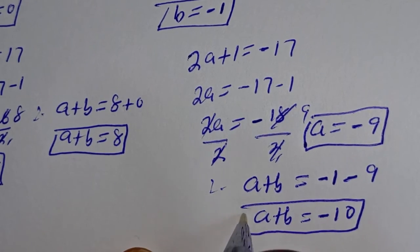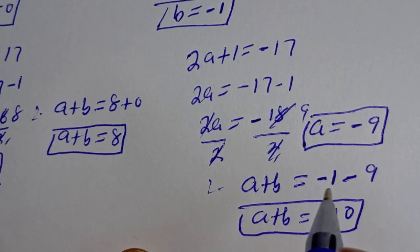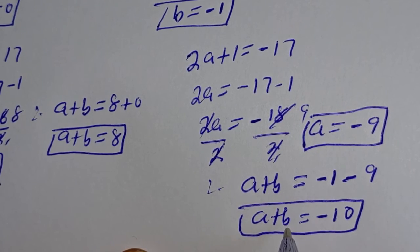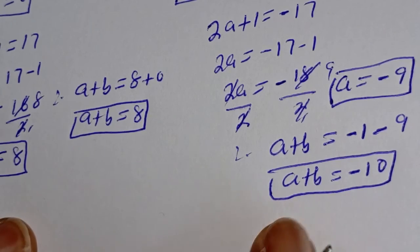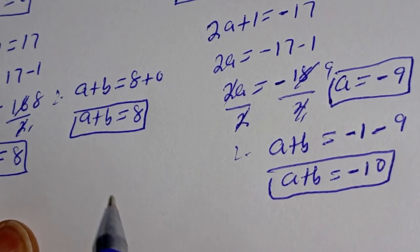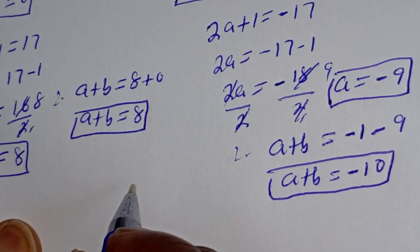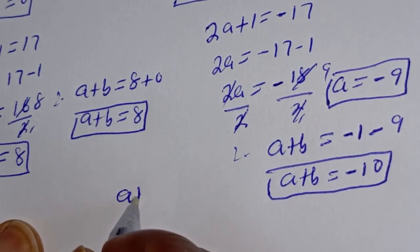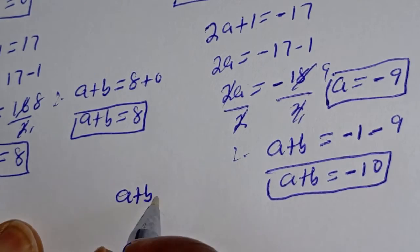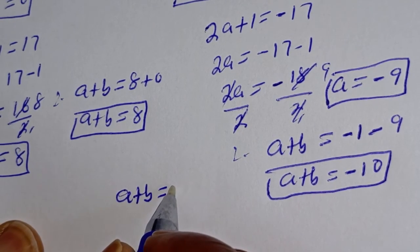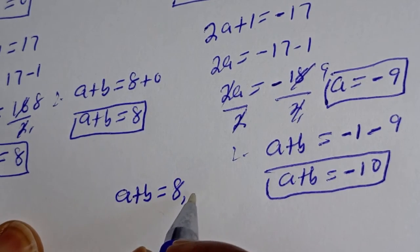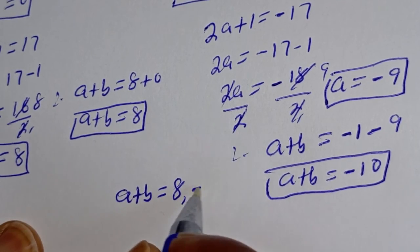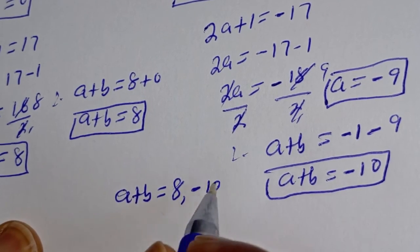This is also the same value of a plus b. Therefore, our final answers are a plus b is equal to 8 and minus 10.